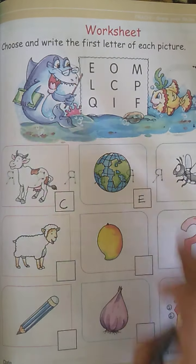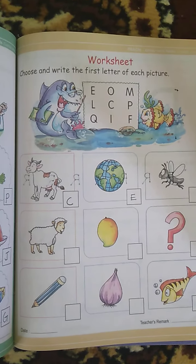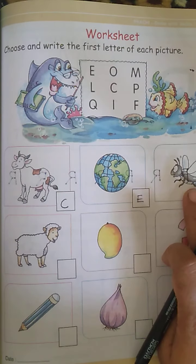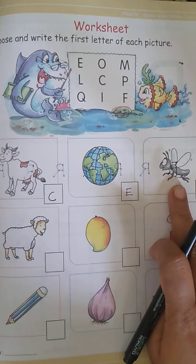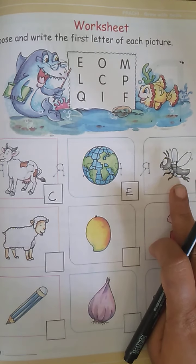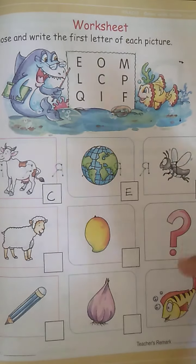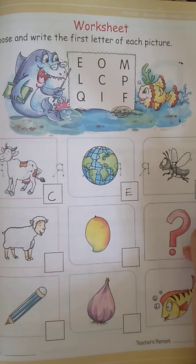Now, which insect is this? Have you seen this insect? This insect keeps biting you during night or if you go out during evening. What is this? It's a mosquito. This is how a mosquito looks. Now, what is the first letter for mosquito? M. So, we are going to write the letter M here.